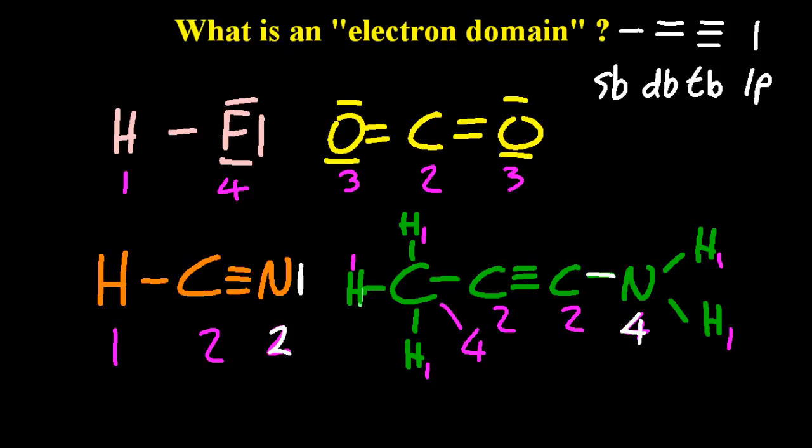And for the nitrogen on the right, there are three single bonds that are electron domains. And the fourth electron domain is the lone pair, again, that I didn't draw in.